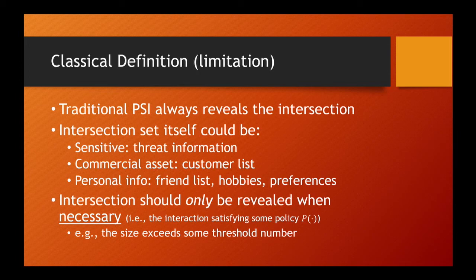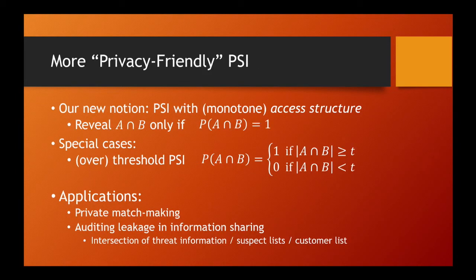We find that always revealing the intersection is not preferable in many natural settings. We believe we should only reveal the output when necessary. The definition of necessary could be different in different contexts. In the previous examples, the condition is based on the intersection size — for example, exceeding some threshold. In other applications, the output should be revealed only if a certain element exists in the intersection. So in general, we initiate the study of Private Set Intersection with access structure, imposing an additional requirement: the intersection should be revealed only if it satisfies certain conditions.